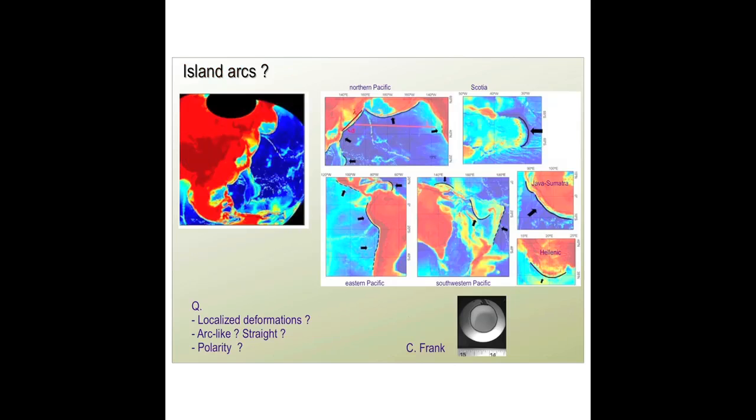You see this in the northern Pacific, you see this off the coast of South America over here, you see a part which is straight, this is Baja California, the southwestern Pacific near Australia, Java, Sumatra, lots of places.